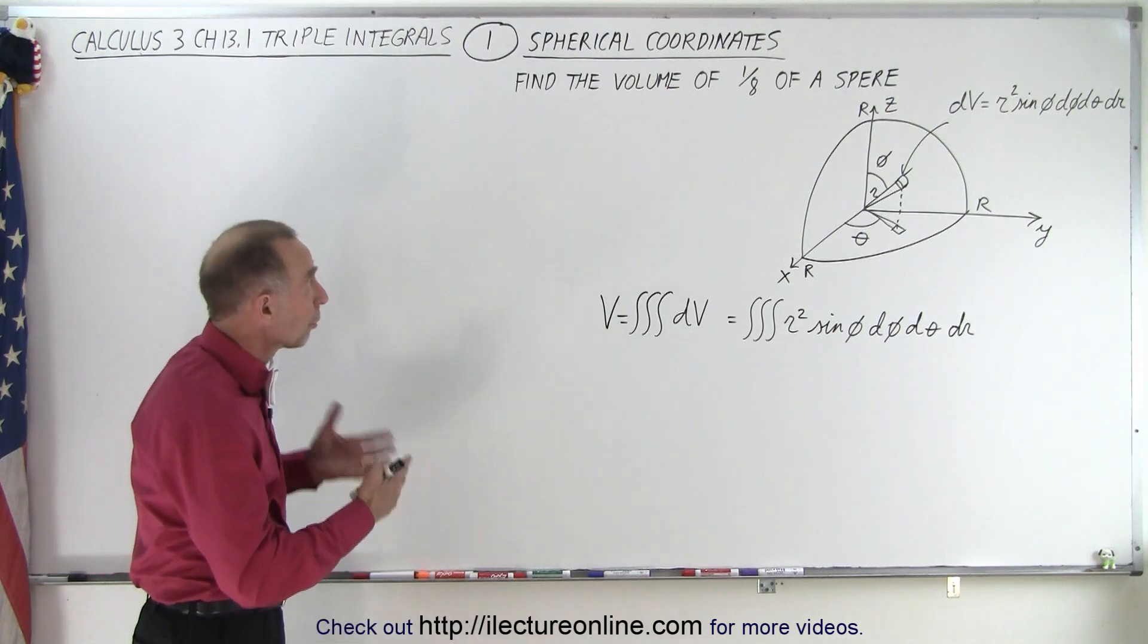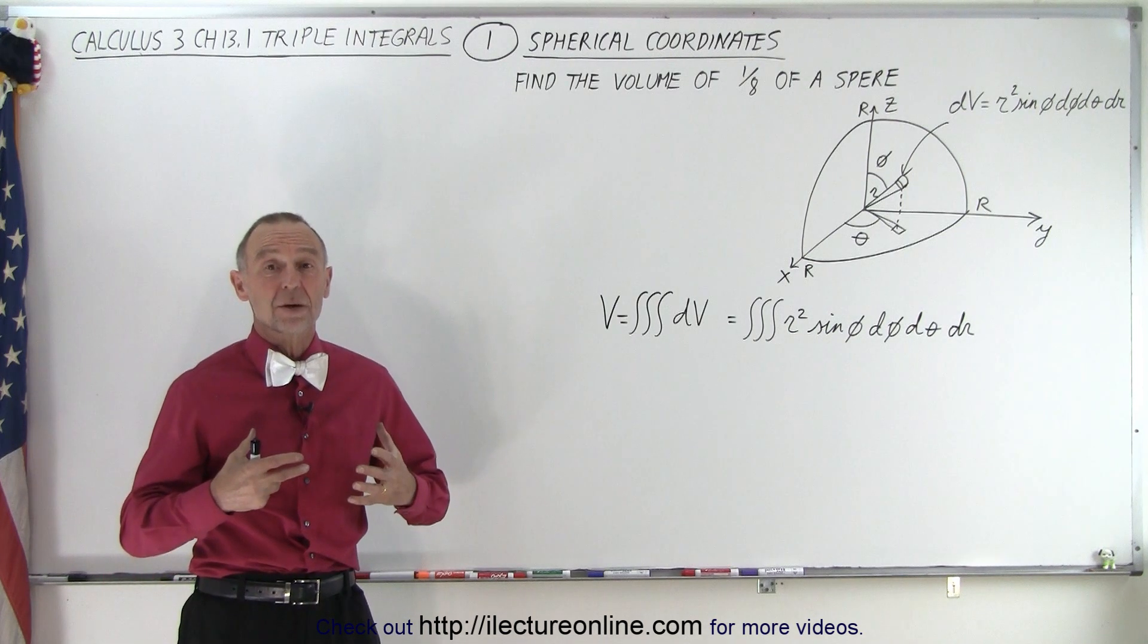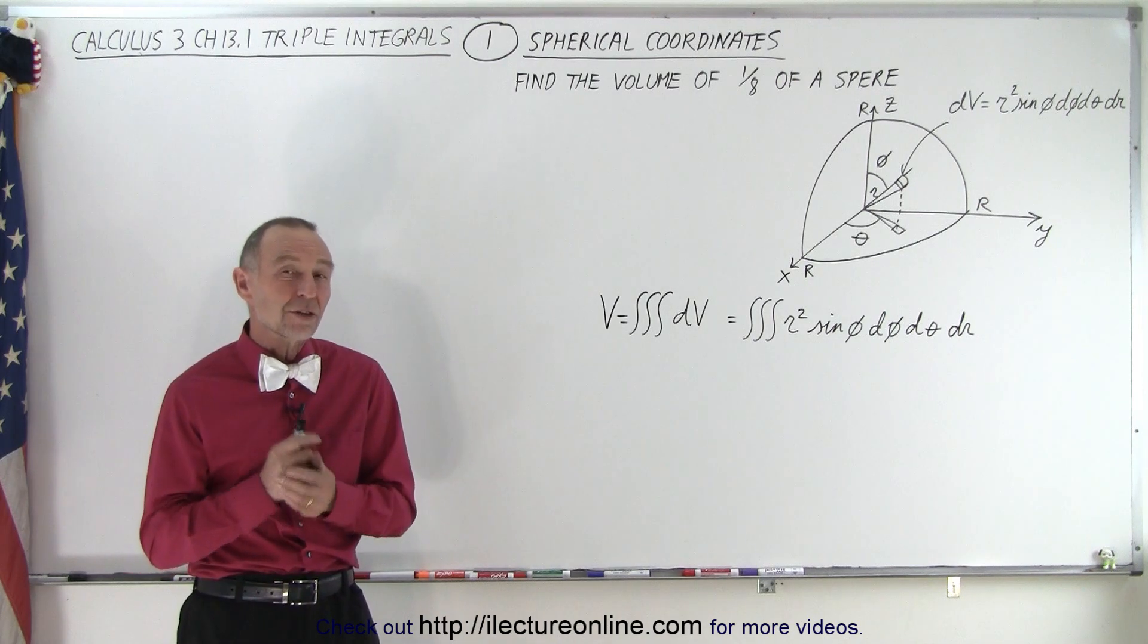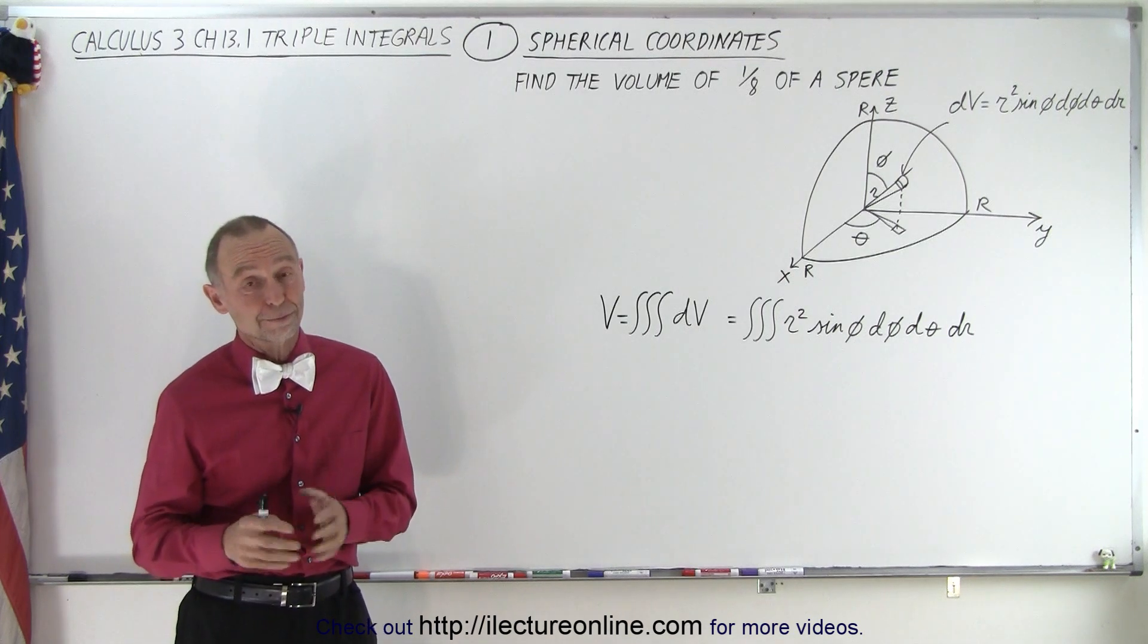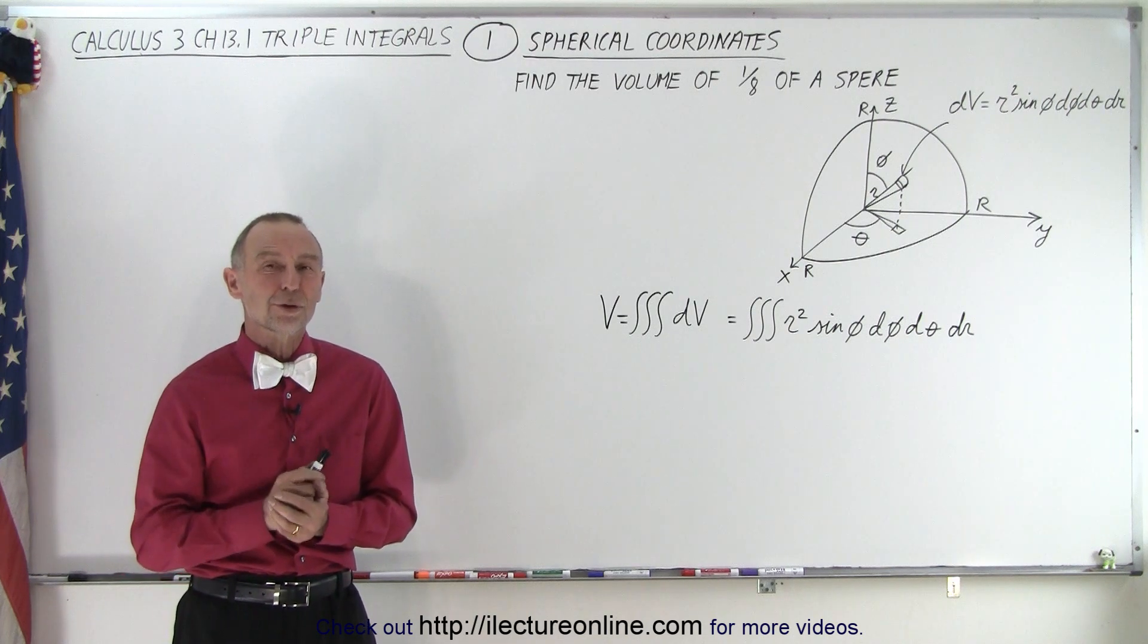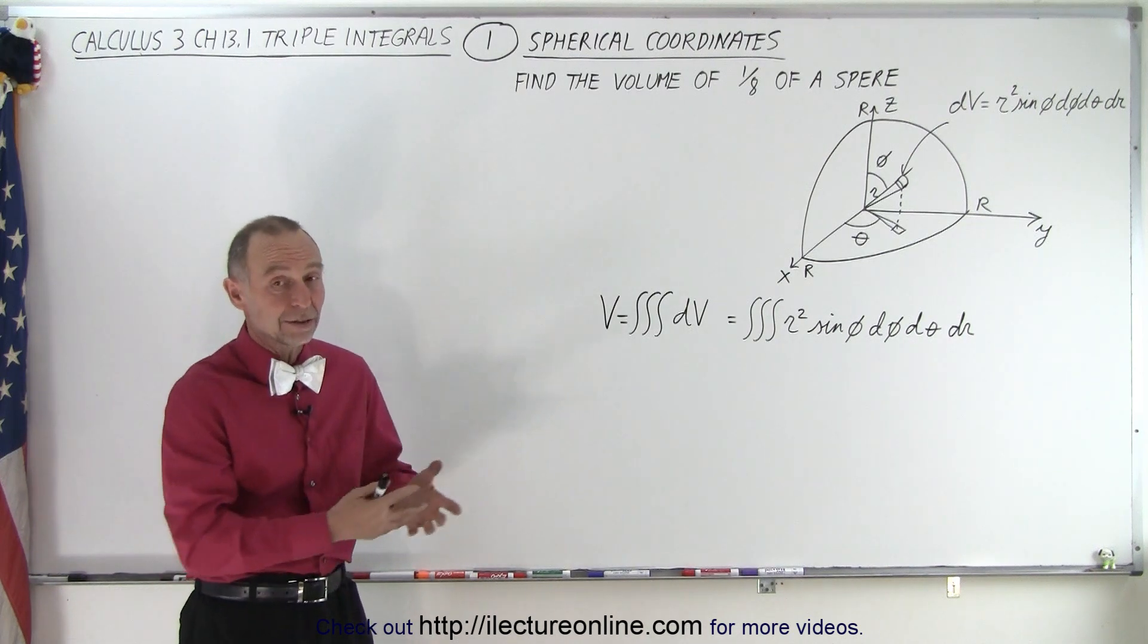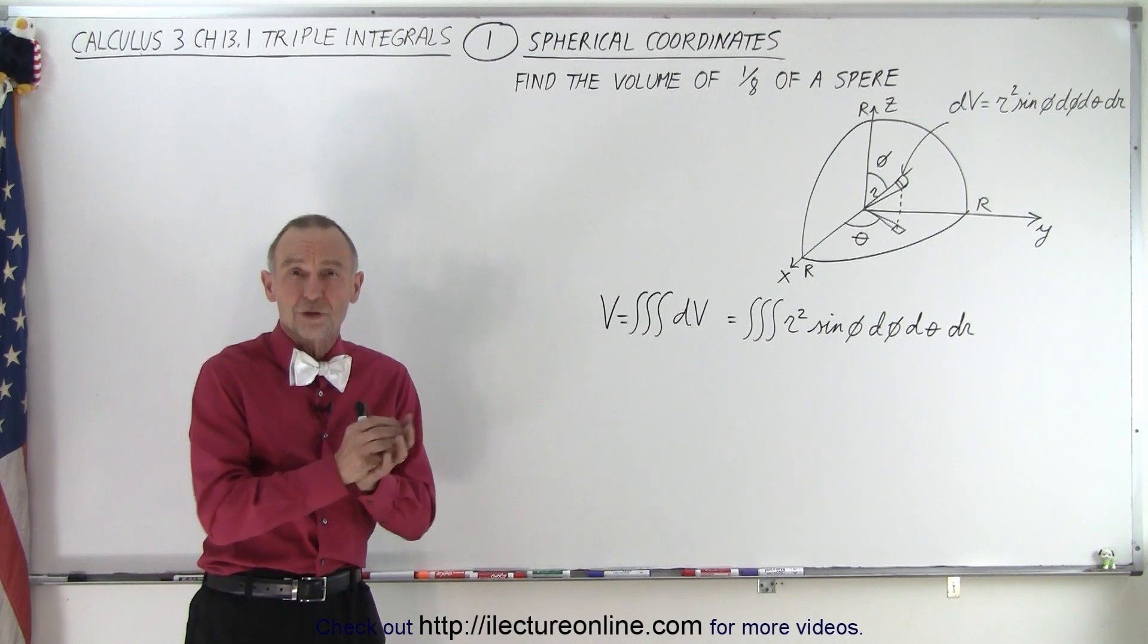So for this example, where we're going to find the volume of one-eighth of a sphere, you might say spherical coordinates may be the easiest, and by all means it is. But that doesn't mean you cannot solve that very same problem using cylindrical coordinates or using Cartesian coordinates. However, that will be much harder.